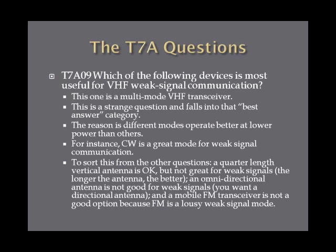Which of the following devices is most useful for VHF weak signal communication? The answer is a multi-mode VHF transceiver. Different modes operate better at lower power — CW is a great mode for weak signal communication, while FM is not. A quarter-wave vertical antenna is okay, but for weak signals, a longer antenna tuned to that frequency is better. An omnidirectional antenna doesn't focus signals, a directional antenna is better, and a mobile FM transceiver is a poor weak signal mode.